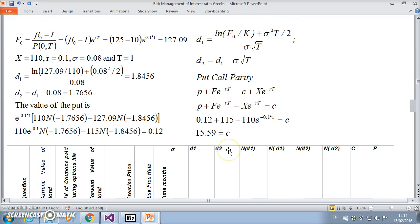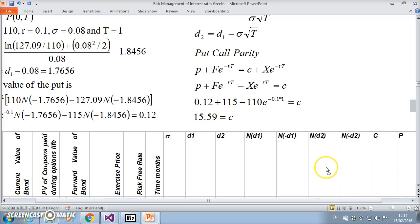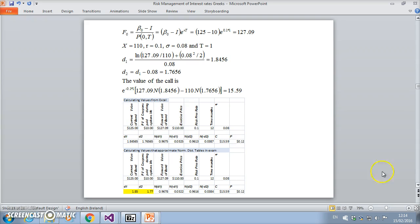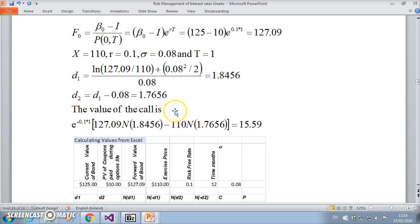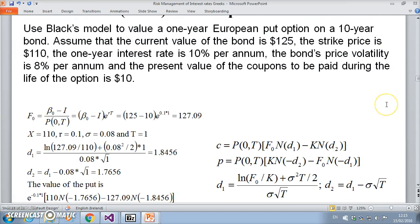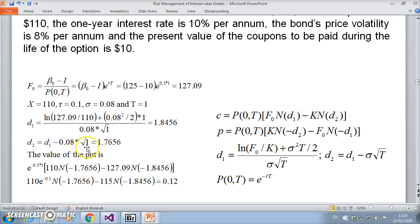That could be worked out using put-call parity or worked out using the Black model itself, just implemented again. If I didn't use put-call parity and hadn't already estimated the value of the put, and I just want to know the value of the call, the formula would be e^(-rt) times [F·N(d₁) - X·N(d₂)]. I'm missing something here—the time period.